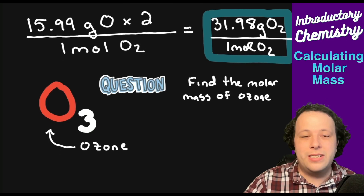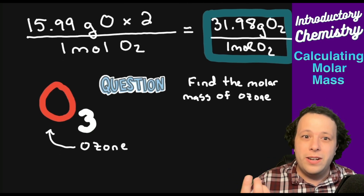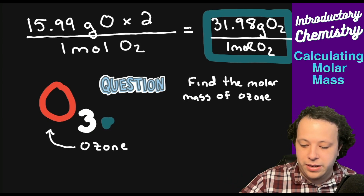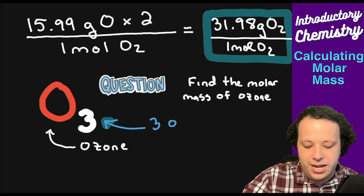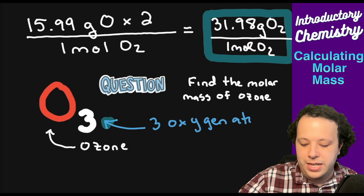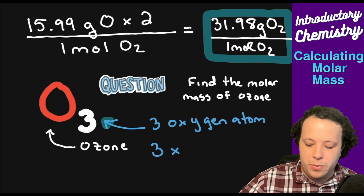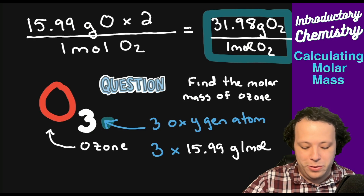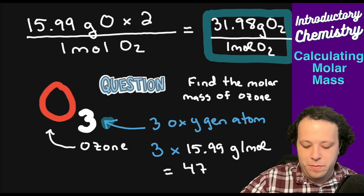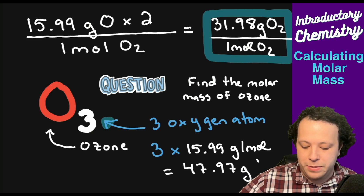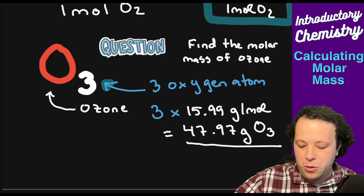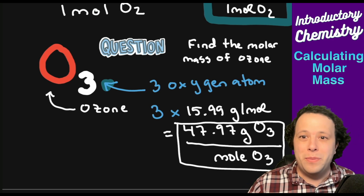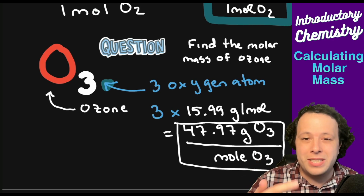Moving to ozone, O3: the subscript of three tells us there are three oxygen atoms in this calculation. We multiply three by 15.999 grams per mole, giving a molar mass of 47.97 grams of ozone per mole of ozone. The key idea is that when calculating molar masses, we multiply the periodic table value by the subscripts we see within the chemical formula.